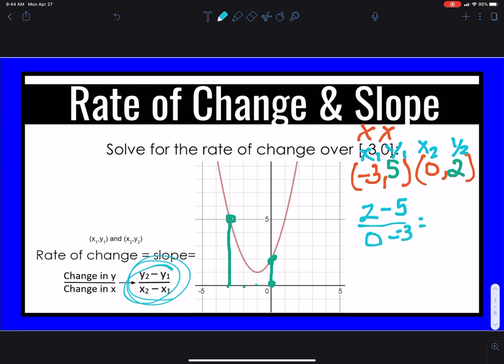And we're going to go ahead and solve straight across. So 2 minus 5 is a negative 3. Over 0, this becomes a plus. 3. We solve that. Negative 3 over positive 3 becomes a negative 1. So your rate of change is negative 1.